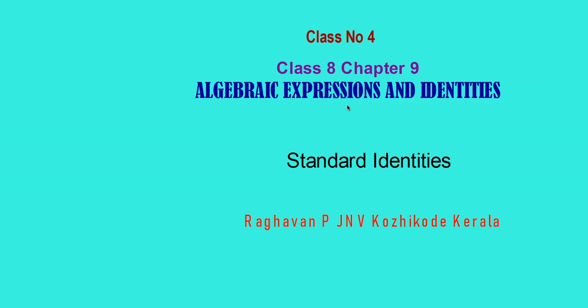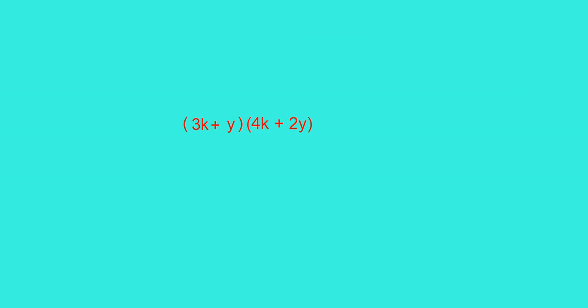Hi to all. Welcome to my fourth class on algebraic expressions and identities. Today I am going to discuss standard identities. How will you multiply 3k plus 5 into 4k plus 2y? That is the multiplication of a binomial by a binomial.